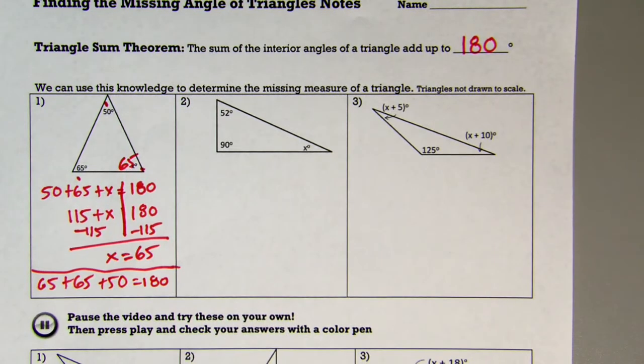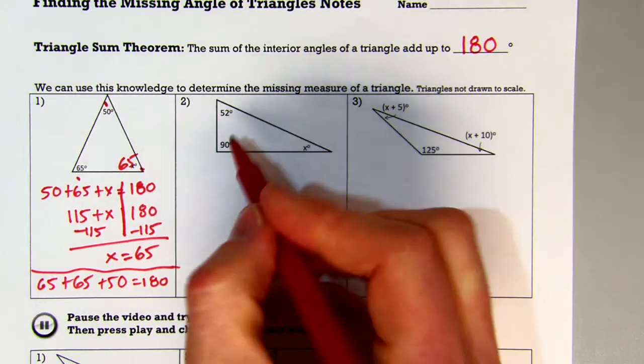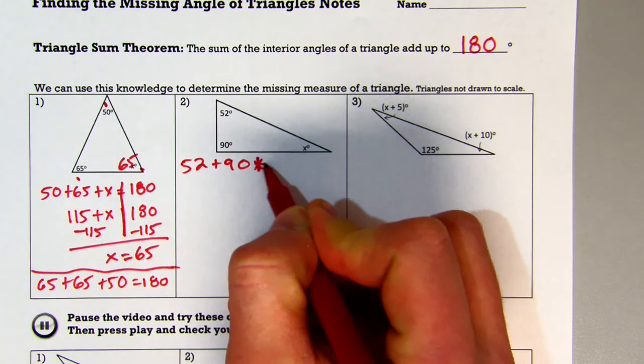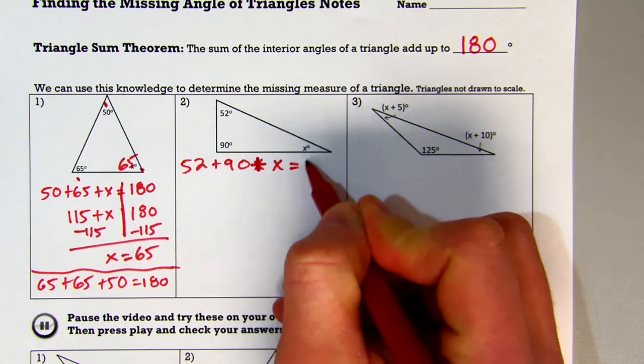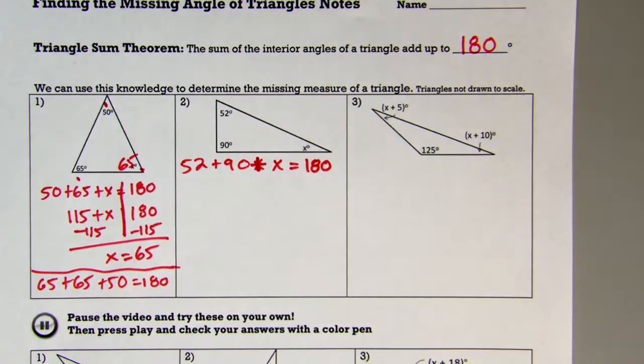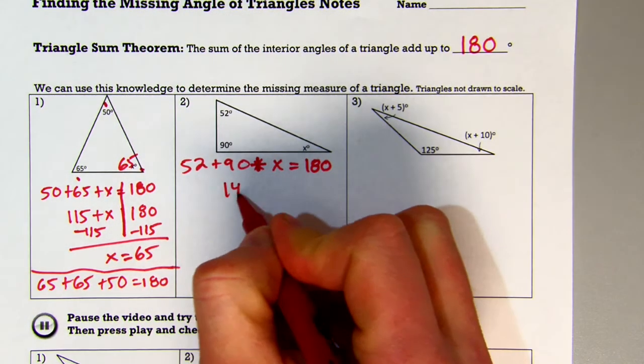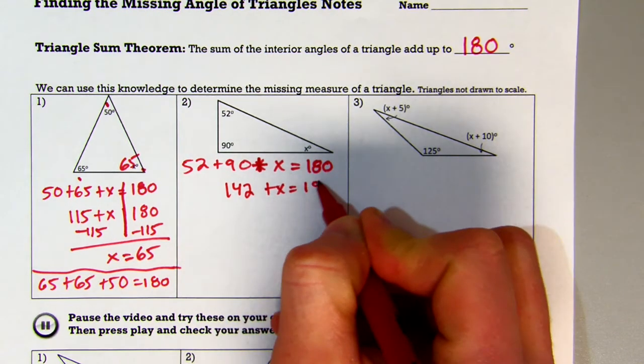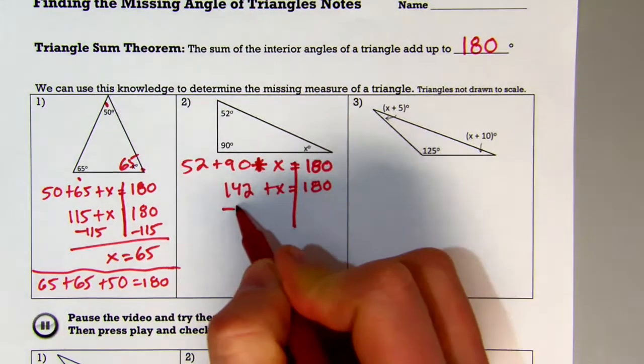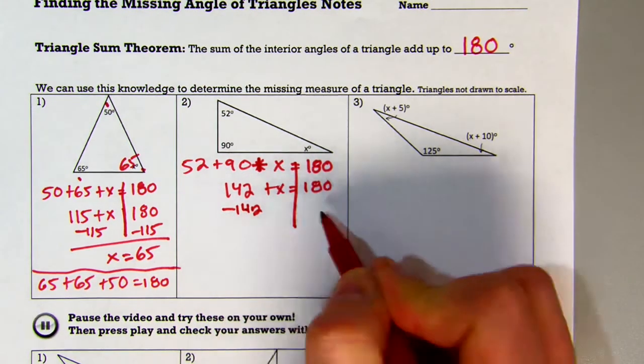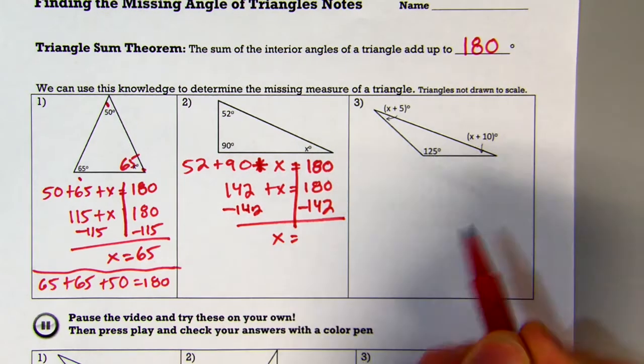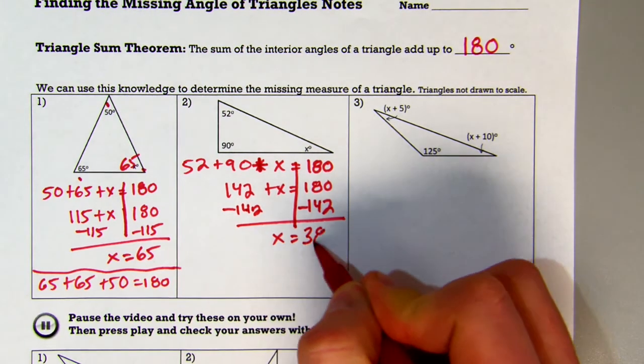Number two, I have 52, 90, and x. So I'm going to do 52 degrees plus 90 degrees plus x equals 180. Combine my like terms of 142 plus x equals 180. Let's draw my line, subtract by 142, and I get x equals 38.